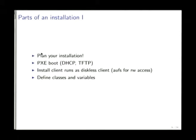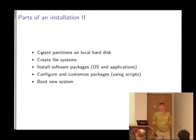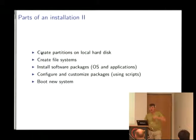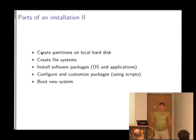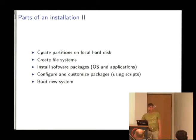We define the FAI classes and some shell variables, then create the partitions and file systems, then install the software packages. Even the Linux kernel is not something special for FAI — it's just a Debian package that we install and configure. After installing all packages with the preseeding information, we can run customization scripts. If you already have a CFEngine, Puppet, or Chef environment, you can also run your scripts in this part. I mostly use shell scripts for the customization. Then you reboot the machine and it's ready to go.